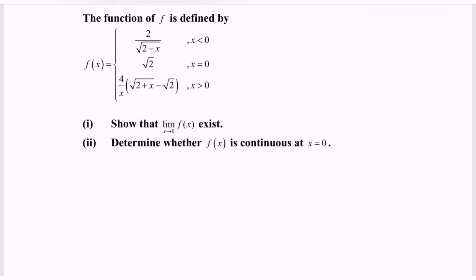The function f is defined by f(x) where we have 2 over square root of 2 minus x, with the domain x less than 0. If the value of x is equal to 0, then the function will be square root of 2. If the domain is x greater than 0, then the function will be 4 over x multiplied with square root of 2 plus x minus square root of 2.